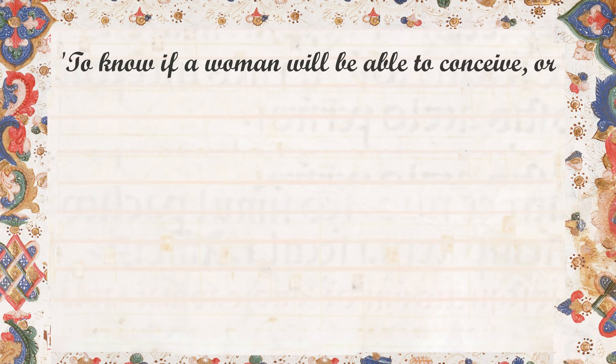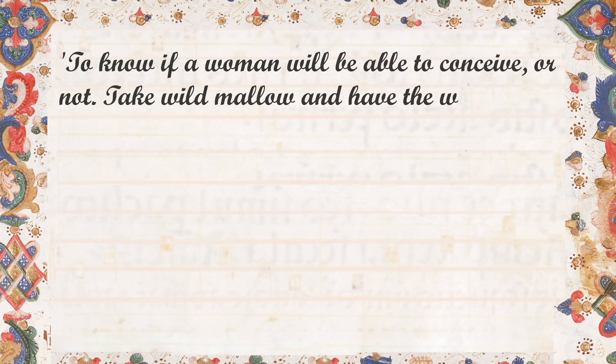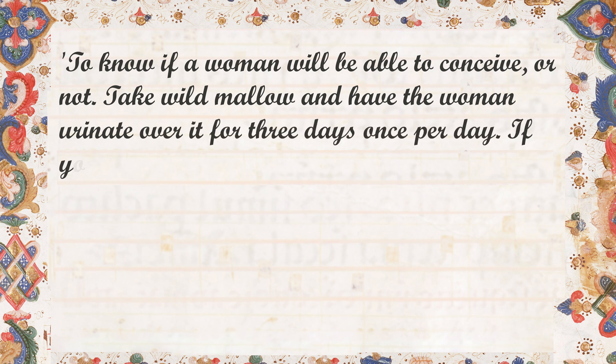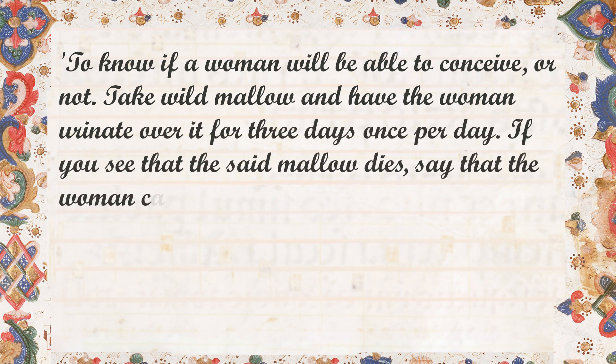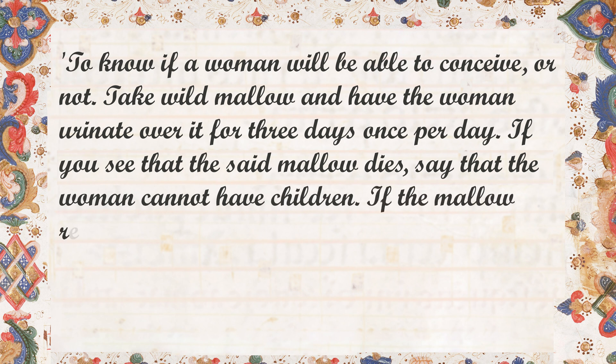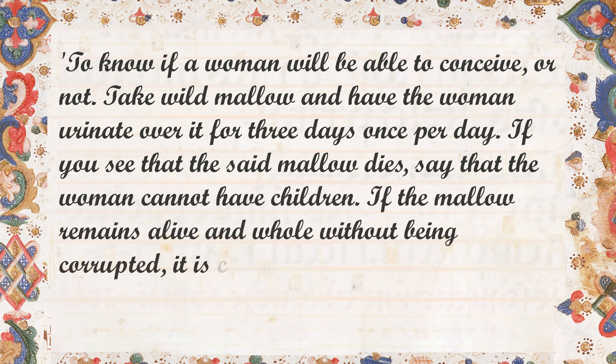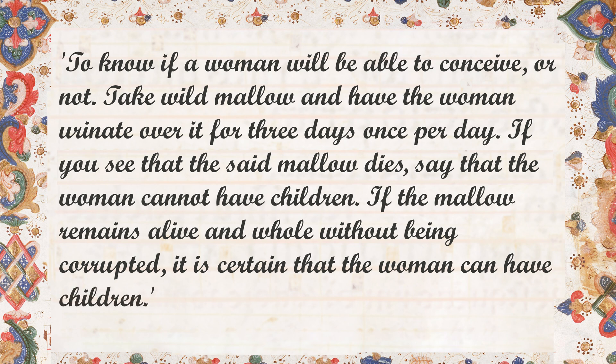Experiments like this appeared in Latin manuscript books and later in printed books in vernacular languages such as Italian or French. If people wanted to know about the fertility of women in particular, there were similar ways, like this one, also from the same 16th century book called House of Recipes: 'To know if a woman will be able to conceive or not — take wild mallow and have the woman urinate over it for 3 days, once per day. If you see that the mallow dies, say that the woman cannot have children. If the mallow remains alive and whole without being corrupted, it is certain that the woman can have children.' In both cases, the symbols are clear: worms are connected to death and infertility, and thriving plants are linked to life and fertility.